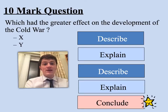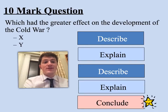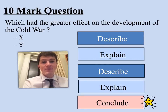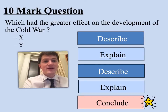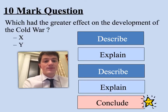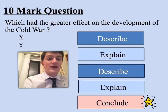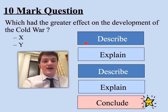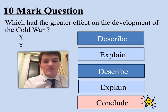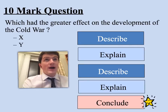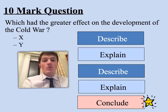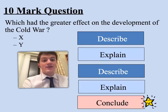The ten-mark question is a really easy way to pick up big marks if you can remember the simple difference between description and explanation. The code we remember it with is DEDEC, and the question will always ask something along the lines of: which had the greater effect on the development of the Cold War, X or Y? In the first paragraph you describe Event X — as much information as you can remember about why it happened, what actually happened, and how it took place. Then you explain why Event X created tension or led to an effect on the Cold War.